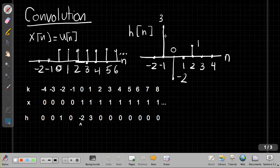It starts at n equals minus 1 with height 3, then minus 2 here, then 0, and then at n equals 2, it's 1, and then 0 everywhere else.